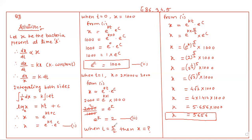Then we will find x when time t is equal to 5/2. From equation 1, x equals e raised to kt into e raised to c. Substituting t equals 5/2: x equals e raised to k into 5/2, into e raised to c. This equals e raised to k raised to the power 5/2, into 1,000. Now e raised to k has value 2, so x equals 2 raised to 5/2 into 1,000.